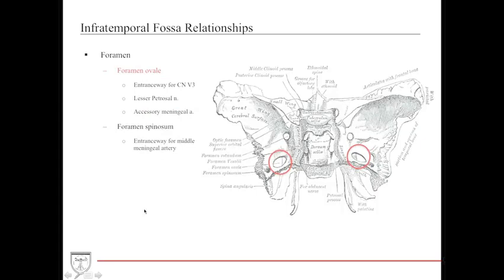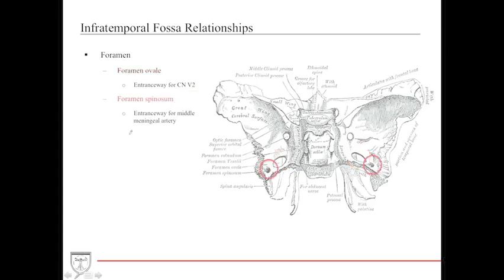The foramen ovale is a foramen in the greater wing of the sphenoid bone that serves as a passageway for three structures: cranial nerve V3, the lesser petrosal nerve, and the accessory meningeal artery — which comes off the first segment of the maxillary artery. The foramen spinosum is the entranceway for the middle meningeal artery, which also comes off the first segment of the maxillary artery.